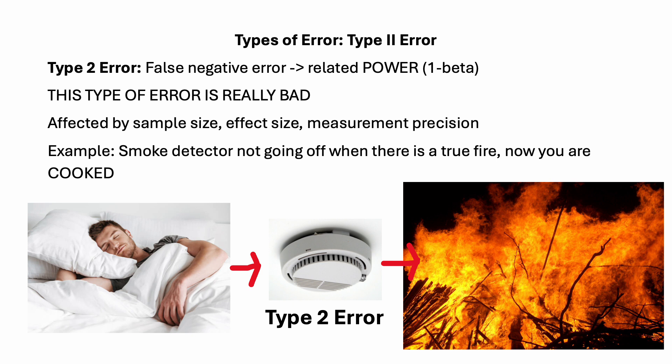Now let's contrast that with type 2 error. Type 2 error is your false negative error, and it's usually related to power, which is 1 minus beta. So the higher your power, the lower your false negative error. Type 2 error is really bad because you're calling something that should be a positive as negative — saying that the disease or whatever is going on is not present. Type 2 error is affected by sample size, effect size, and measurement precision. The higher the sample size, the higher the effect size, and the better the measurement precision, the lower your type 2 error and the higher your power.